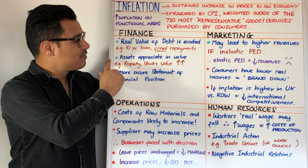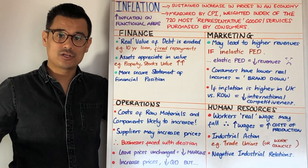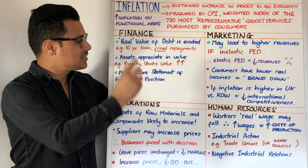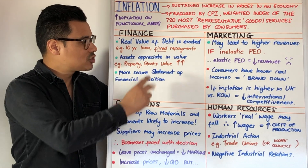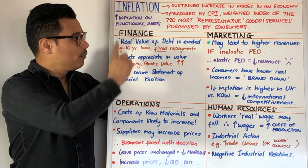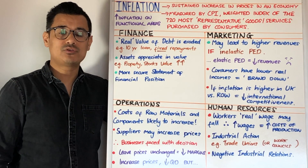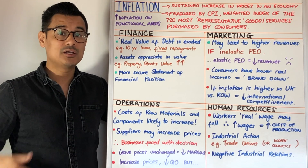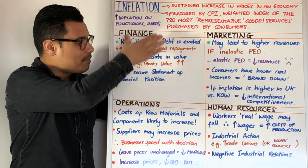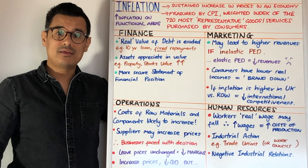Also within the finance department, your assets might appreciate — go up in value. Those assets might be property or stocks. If you get a combination of both points — debt erosion and asset appreciation — it might make your statement of financial position, your balance sheet, much more secure. So that's potentially a benefit of increasing inflation.